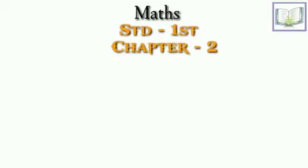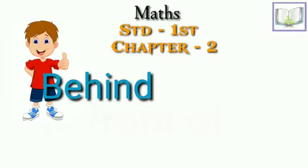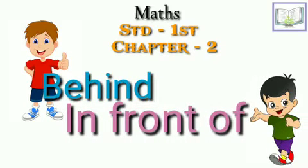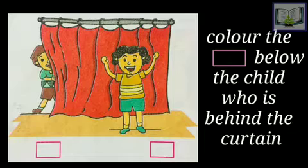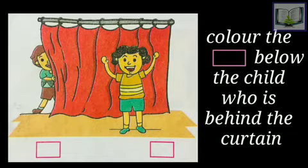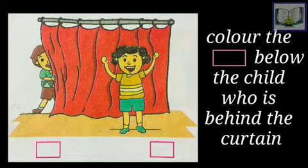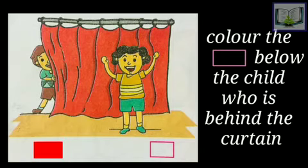Hello kids, today we will start with the math standard, Chapter Number 2: Behind and In Front Of. Let's see — color the square below the child who is behind the curtain. Behind matlab back side, piche. So which boy is behind the curtain? That boy is behind the curtain — woh curtain ke piche hai.